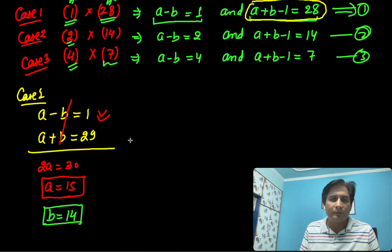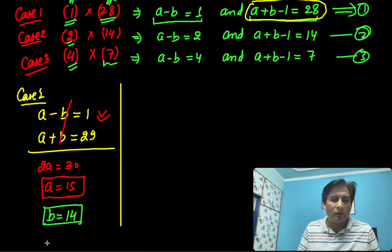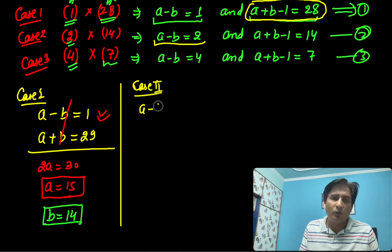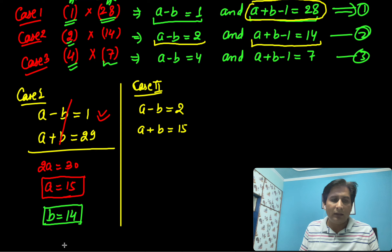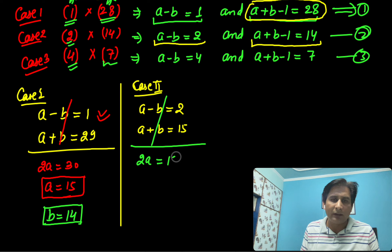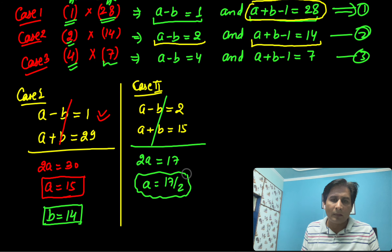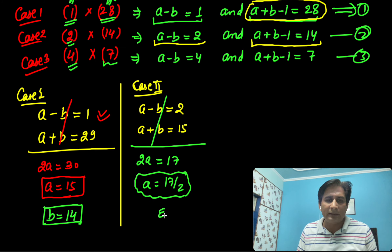For Case 2, the equations are A minus B equals 2 and A plus B equals 15. Adding: 2A equals 17, so A equals 17 divided by 2. Since A and B must be natural numbers, this is not a natural number, so Case 2 is rejected.